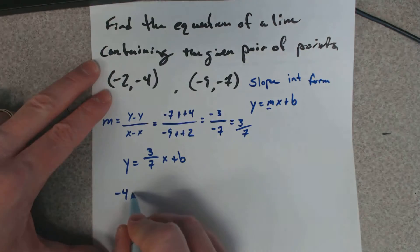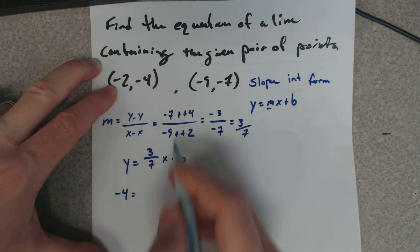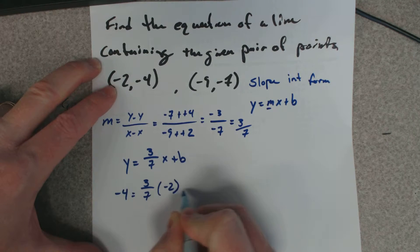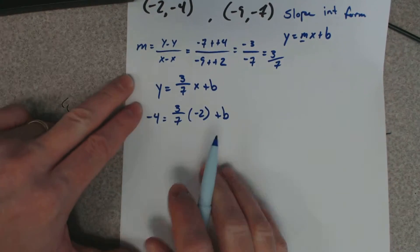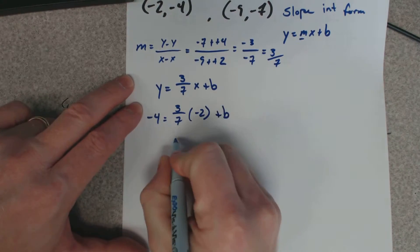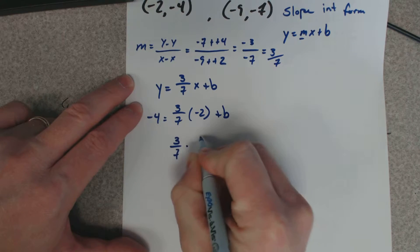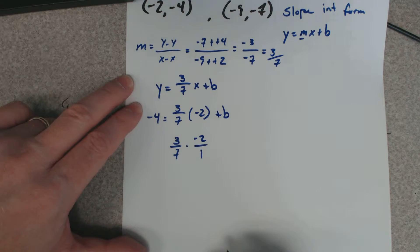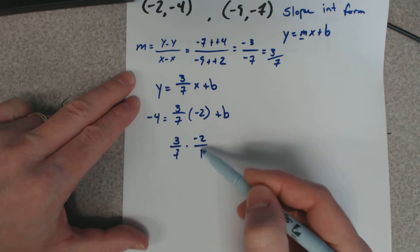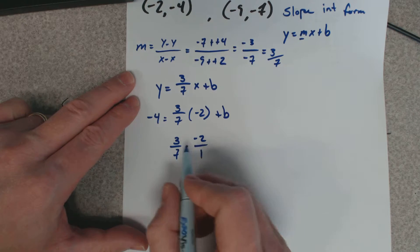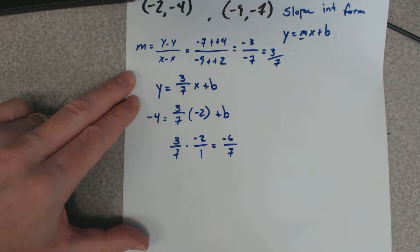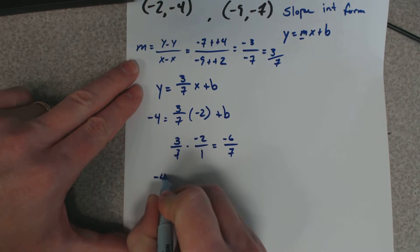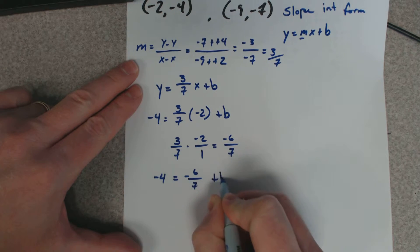So I'm going to pick this one here - it doesn't matter, I could use this one and get the same answer. Then I'll put negative 4 equals 3/7 times negative 2 plus b. Now we gotta work with a fraction. When I multiply a fraction by a whole number, it's like saying 3/7 times negative 2 over 1. When you multiply fractions, you multiply straight across the top, straight across the bottom. So that becomes negative 6 over 7.